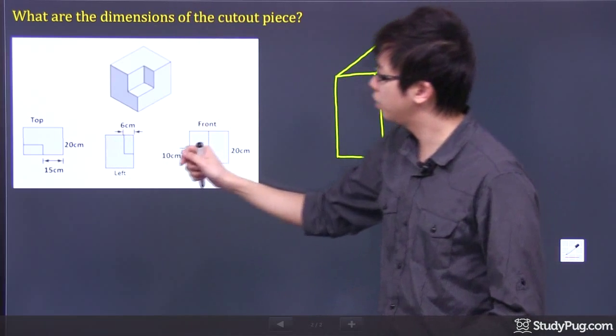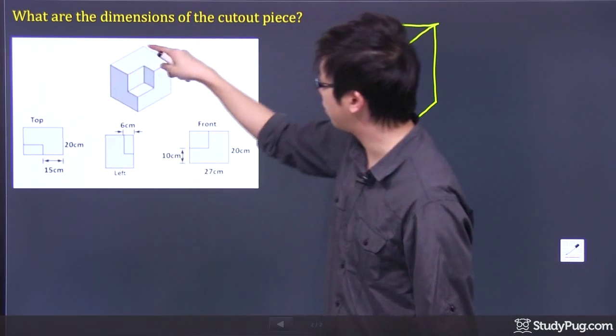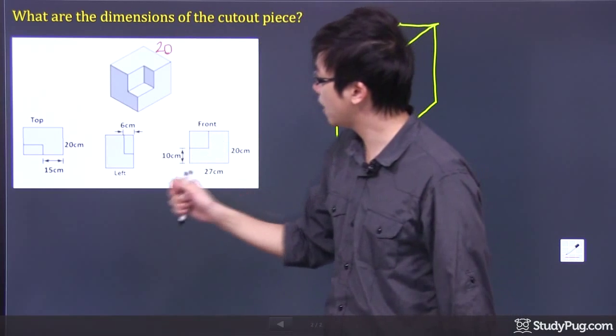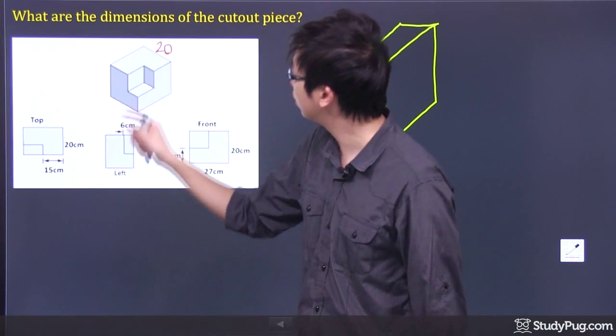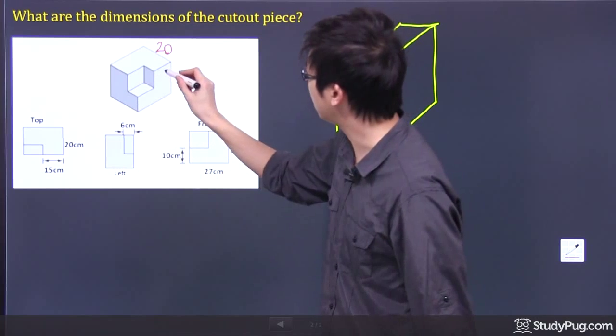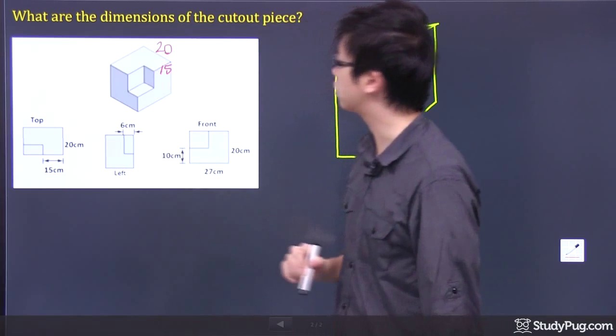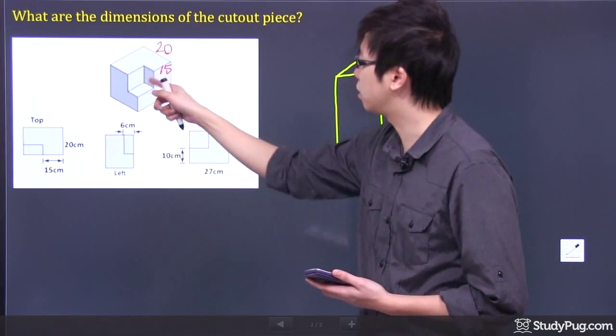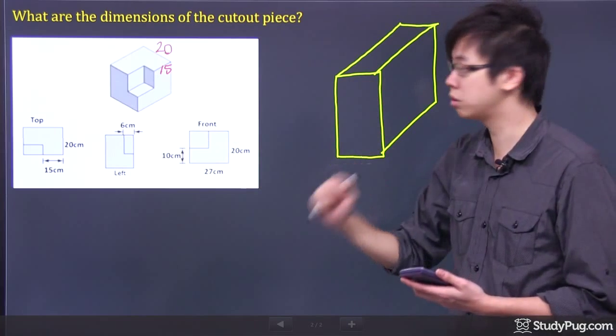So if you're looking from the top, it says right over here on the back is 20, so I'm going to put a little 20 right there to remind ourselves. And then this part right here is 15. So far there isn't too much information that we have to determine the dimension of that little cutout piece.